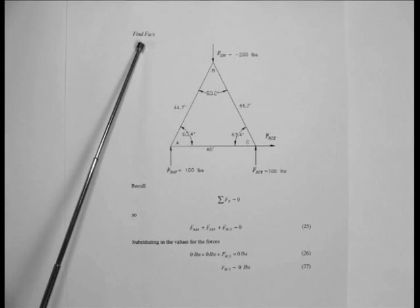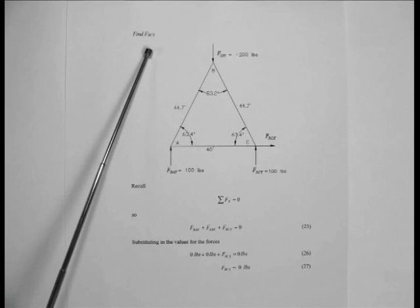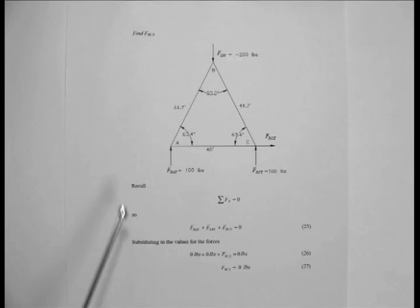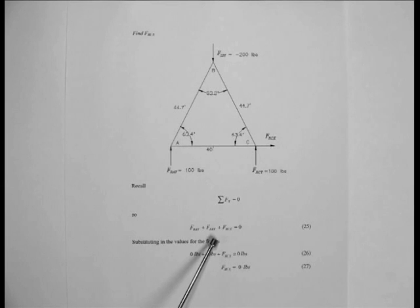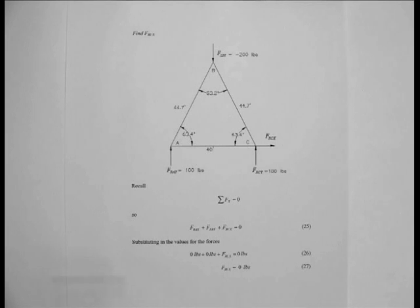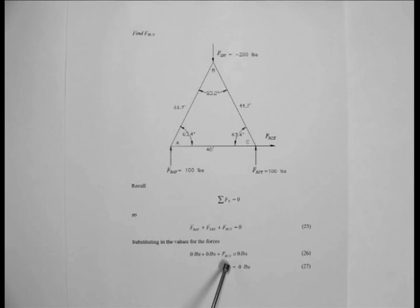Next, we need to find the reactive force applied at point C in the x direction. Recall that the sum of all the forces in the x direction must equal zero. If we add the reactive force at point A in the x direction with the load force applied at point B in the x direction to the reactive force at point C in the x direction, they must equal zero. Substituting in the known values, the force at point A is zero and the force at point B is zero. Therefore, the force occurring at point C in the x direction must also be zero.